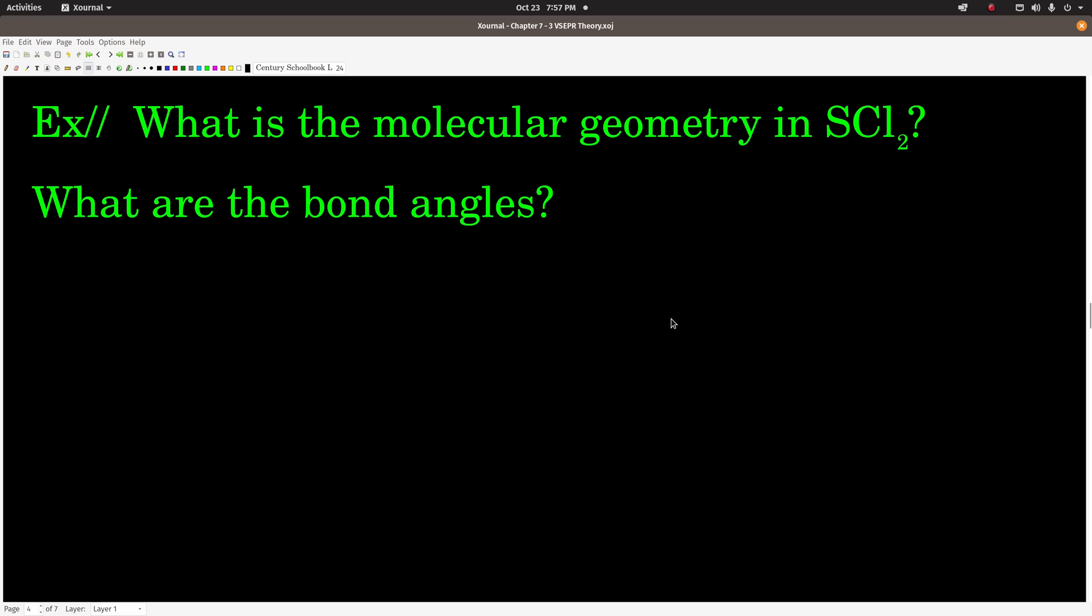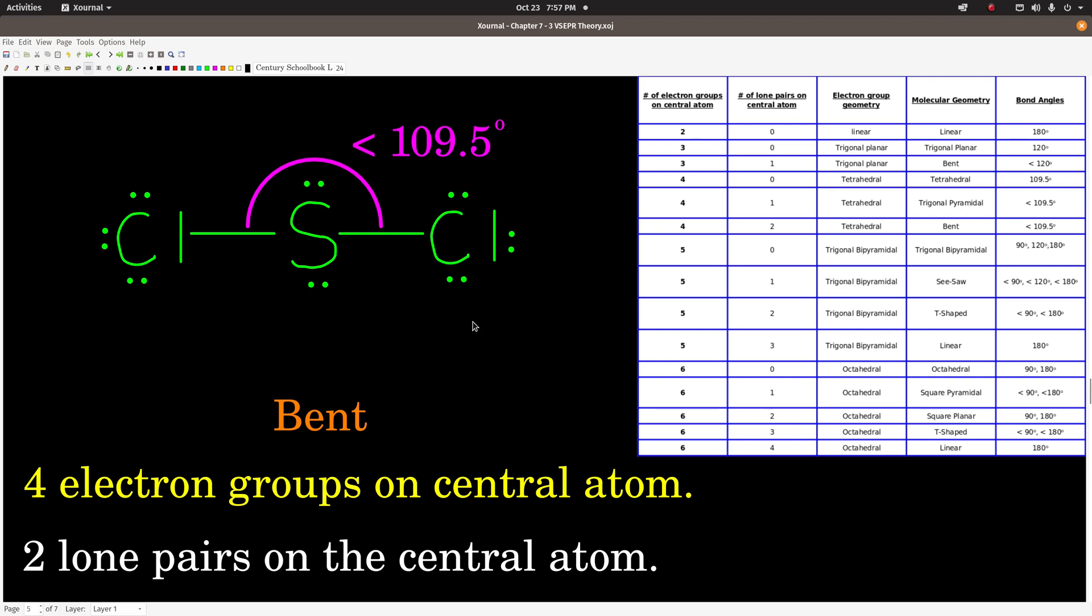Welcome back. So remember, the first thing you need to do is draw the Lewis structure. So this is the Lewis structure for sulfur dichloride, remembering to minimize formal charges and all those things we learned in drawing Lewis structures. And so what we do is when we look at this molecule, we look at the central atom.